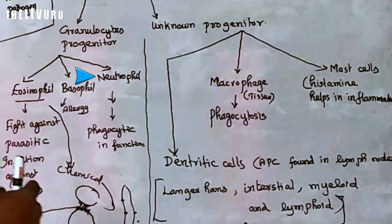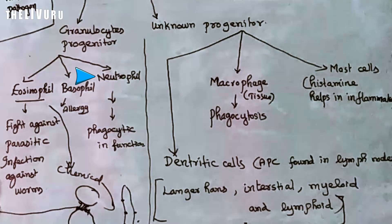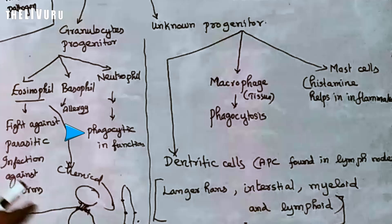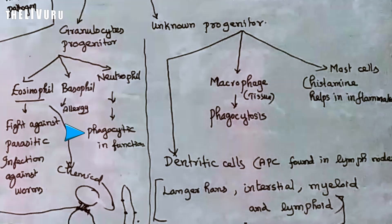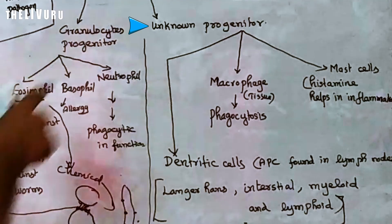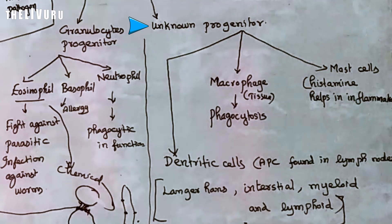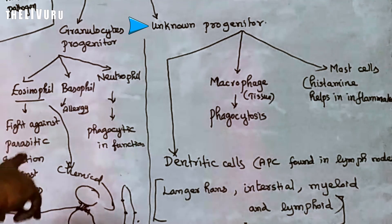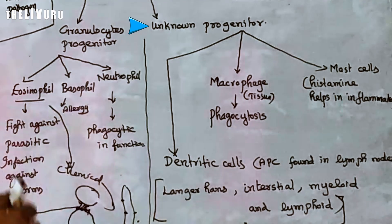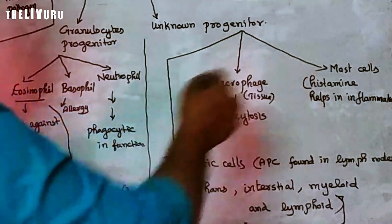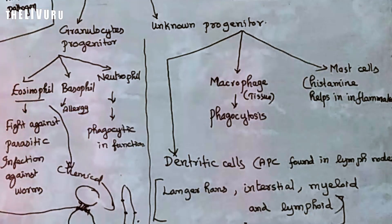Neutrophil is a phagocytic cell involved in fighting infection. The unknown progenitor (monocyte progenitor) gives rise to three cells: Dendritic cells, Macrophage, and Mast cells.